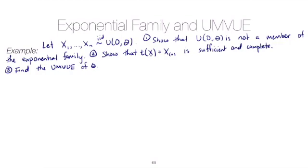Once we do that, we'll then show that the max value of the sample is a sufficient statistic for θ and also a complete statistic for the Uniform(0, θ) distribution. From there, we'll easily be able to find the uniform minimum variance unbiased estimator by finding a function of the max that's unbiased. We had a theorem that told us if we have a sufficient and complete statistic, then there will be a unique unbiased estimator that's a function of that sufficient and complete statistic, and that will be the best estimator.